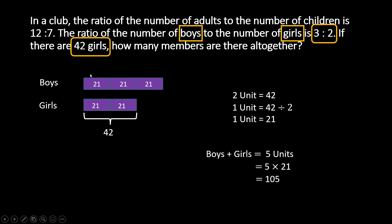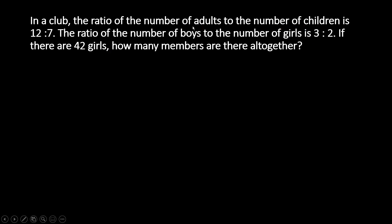We've solved the first part of the puzzle — basically it's the second part of the puzzle, and we are going backwards in this case. So we move on to the first part now. The ratio of the number of adults to the number of children is 12 is to 7. So adults will have 12 units and children will have 7 units.